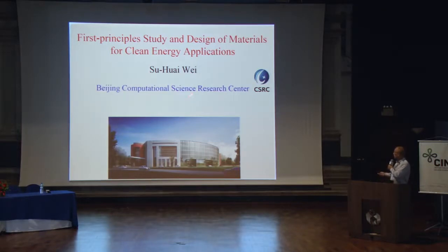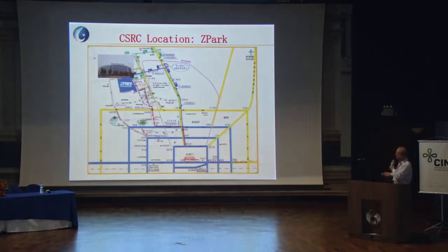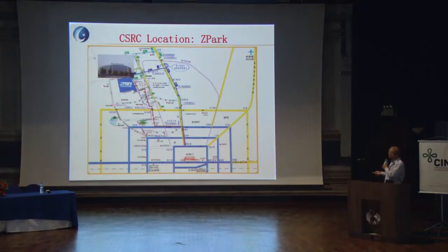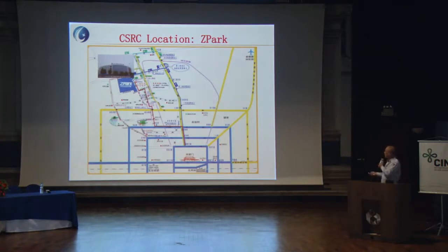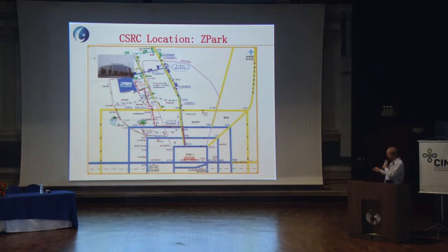I'm at the Beijing Computational Science Research Center. Let me give you some introduction because we're not that famous. We are located in Beijing, China — this is the center of Beijing, the Tiananmen Square area. We are in the Zhongguancun Software Park, where most of China's internet companies have their headquarters or offices. We're not too far from famous universities like Tsinghua and Peking University, and about 40 kilometers from the airport.